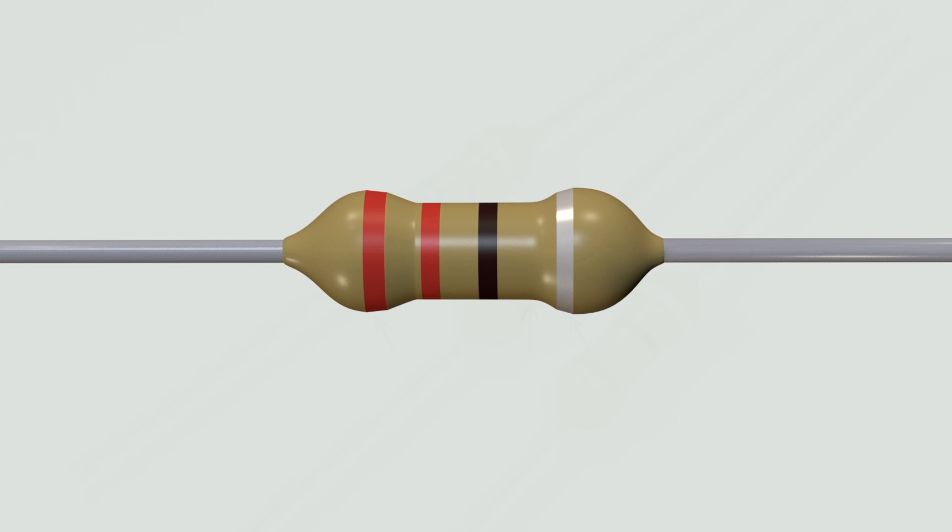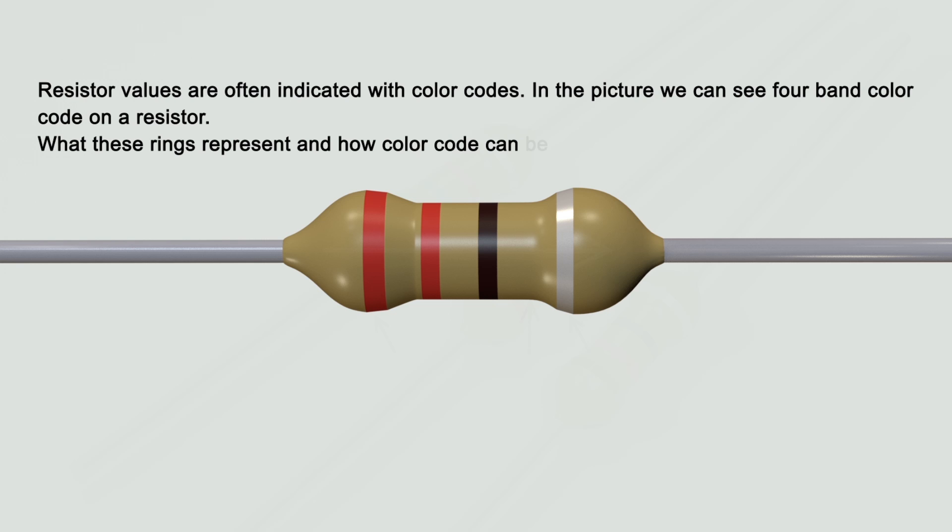Resistor Color Codes. Resistor values are often indicated with color codes. In the picture we can see four band color code on a resistor. What these rings represent and how color code can be read?